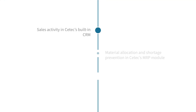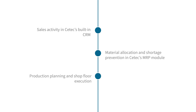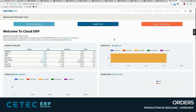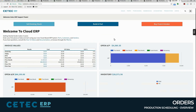From sales activity in CTec's built-in CRM, to material allocation and shortage prevention in CTec's MRP module, to production planning and shop floor execution — CTec puts every department in your company on the same page.